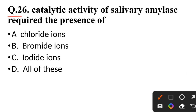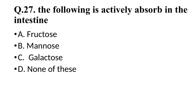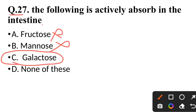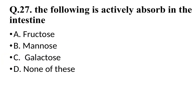Question 26: Catalytic activity of salivary amylase requires the presence of — correct answer is chloride ions. Question 27: The following is actively absorbed in the intestine — not fructose, not mannose — correct answer is galactose, which is actively absorbed in the intestine.